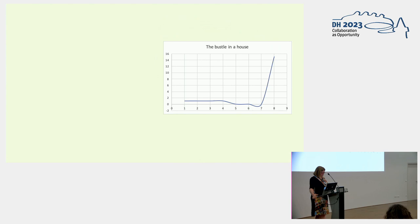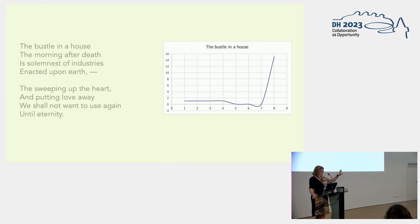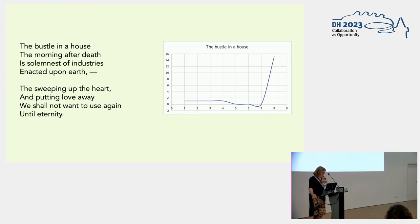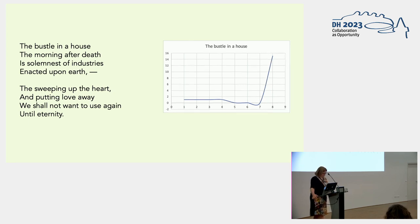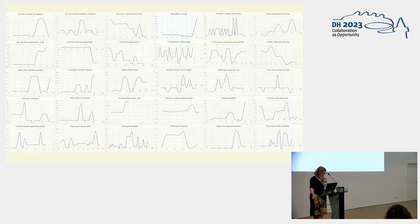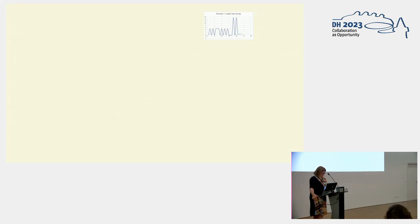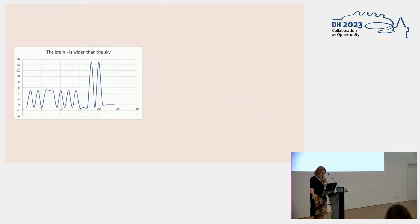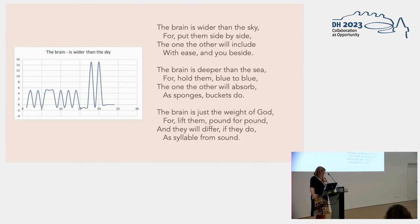This one — 'Bustle in a House' — has a clean swoop up at the end to the infinite, which we could read as evoking the soul leaving earth, so it kind of puts that bustle in the house into perspective. And a similar thing is going on with 'The Brain Is Wider Than the Sky,' though there the contrast is repeatedly made as the poem swings back and forth between human consciousness and the natural world.